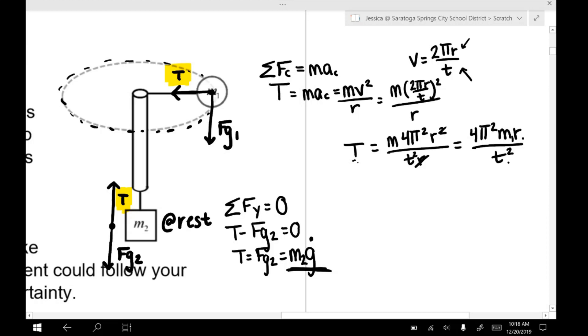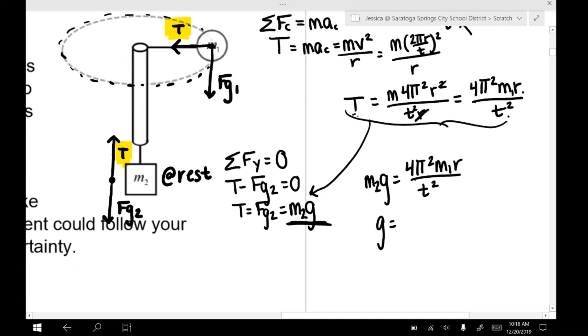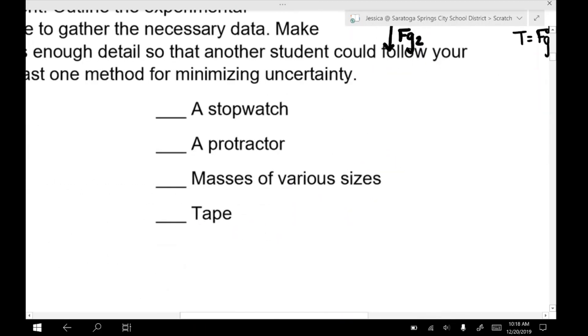So we could then set this equation for tension here equal to M2G down here to help us find G. So we could have M2G is 4π² M1R over T². We just divide both sides by M2, and we see that G could be calculated by finding or using different masses and experimentally finding R and the period or T. So that's it for the first one, and that'll help you get through the rest of the problems.